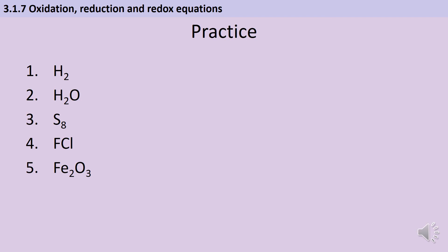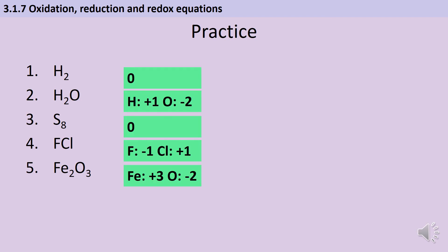Here's an opportunity to pause the video and make sure you've understood this by writing down the oxidation state for each element in the questions. In questions one and three we've got elements, so they have an oxidation state of zero. For question two you can use either rule — oxygen is minus two and therefore hydrogen is plus one, or vice versa. For question four, fluorine goes first because it's the most electronegative — fluorine is minus one — and chlorine is therefore plus one because the overall compound has no charge. Finally in the iron oxide, oxygen is minus two, the compound has no charge, so the oxidation states must add to zero, and therefore the iron must be plus three.